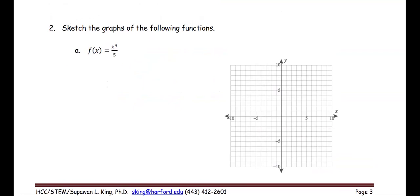Now, look at the example where we're going to sketch the graph of the following function in part a: f of x equals x to the fourth divided by 5, or we can see this as the constant multiple 1 over 5 times x to the fourth — one of the power form where the power n is 4, which is an even number. Recall if the power is an even number, the domain of the function is the set of all real numbers, and the range of the function is the non-negative numbers, from 0 to positive infinity.